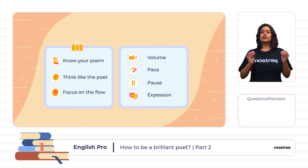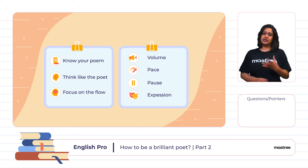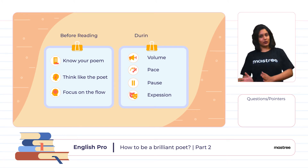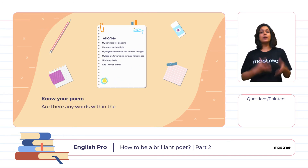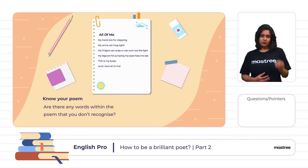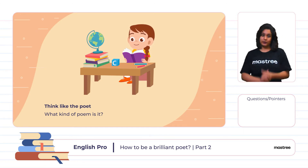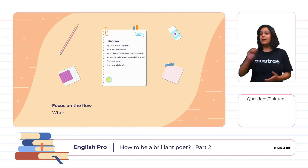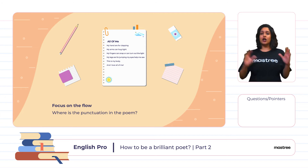First, let's understand the most important thing: how to recite a poem. Poetry recitation has two phases — before recitation and during recitation. Before reciting a poem, you should know your poem. Are there any words you don't recognize? If so, look up the meaning and note it down. Think like a poet — what kind of poem is it? This may help identify the poem's ultimate meaning. Also focus on the flow: where is the punctuation? Identifying full stops can indicate how the poem should flow and where different ideas are grouped.